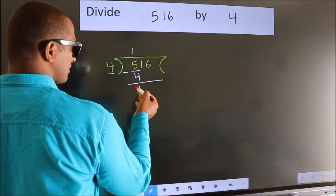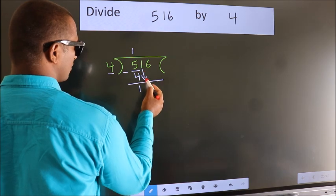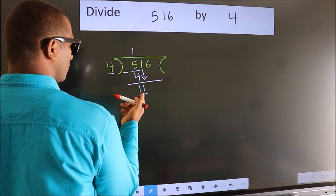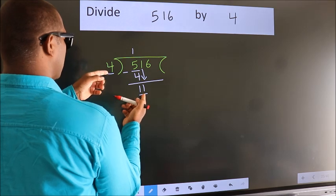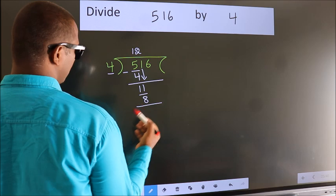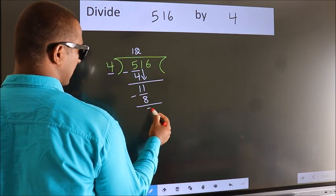After this, bring down the next number. So 1 down. So 11. A number close to 11 in the 4 table is 4 twos 8. Now we subtract. We get 3.